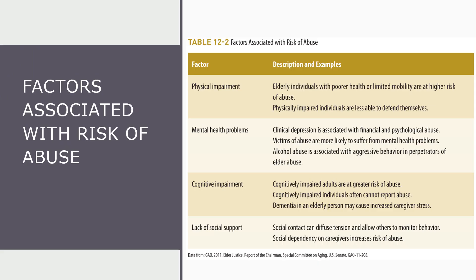These are factors associated with the risk of abuse: greater abuse happens as more impairments occur. If there is a physical impairment or limited mobility, victims are less able to defend themselves or may not be able to communicate the abuse. As you see impairments occurring, you see vulnerability increasing for different types of abuse.